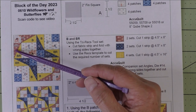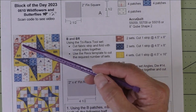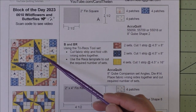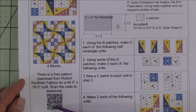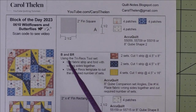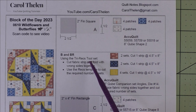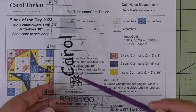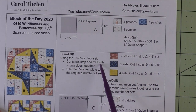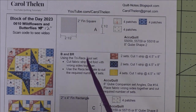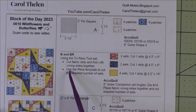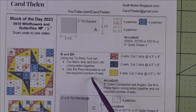Each butterfly has a dark and a light fabric. Patch B and BR are for the half rectangle triangles. In the downloadable pattern there is a template you can cut out, or it suggests using the Tri-Recs tool set — specifically the rectangle part — to cut these pieces. You'll fold the fabric strip with wrong sides together because we need a B and a B reversed.